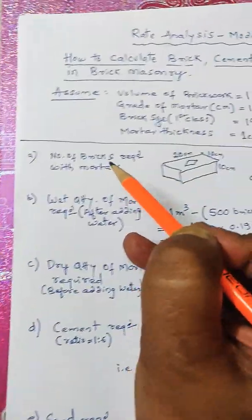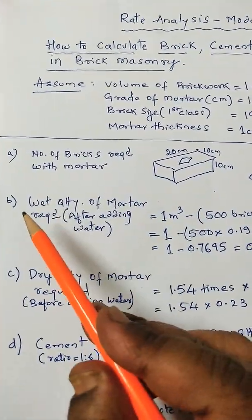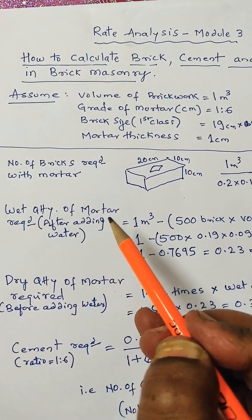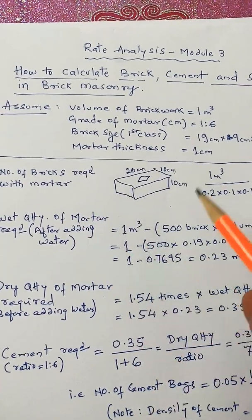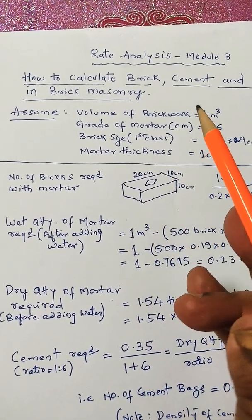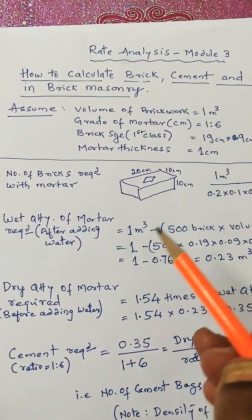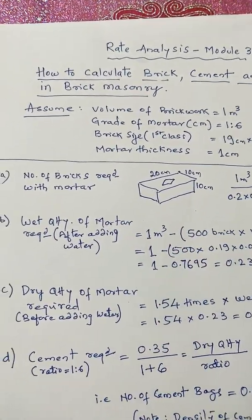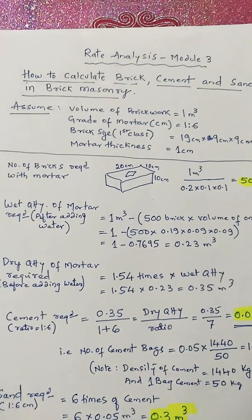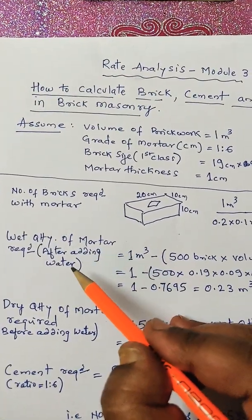Then second step, Step B. Wet quantity of mortar required, that is when the 1 meter cube of brickwork is taken, the cement mortar will be of a wet quantity, that is after adding water.